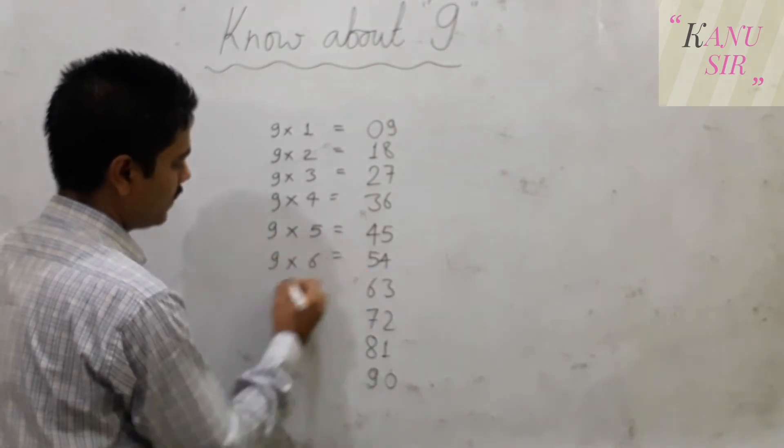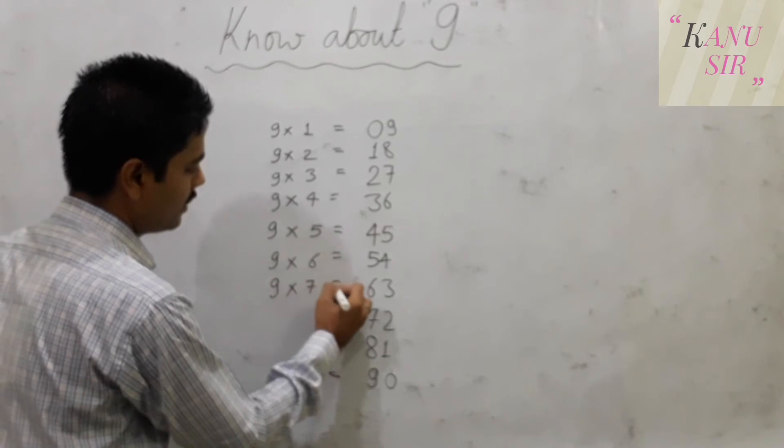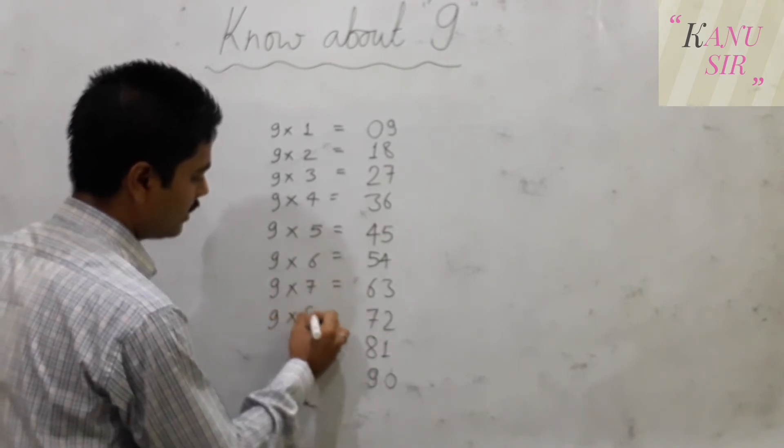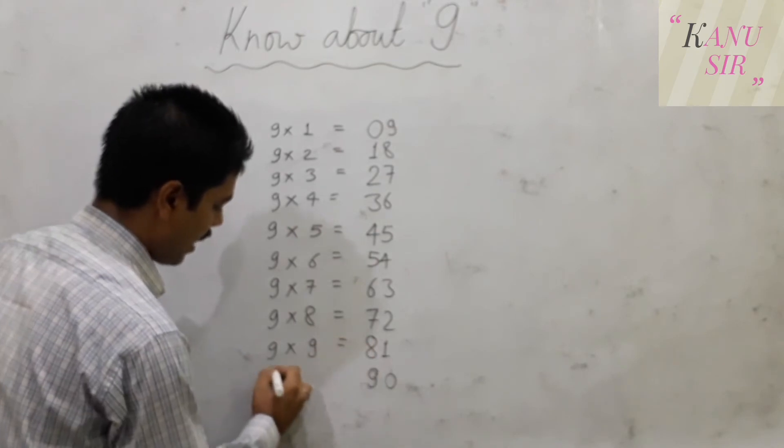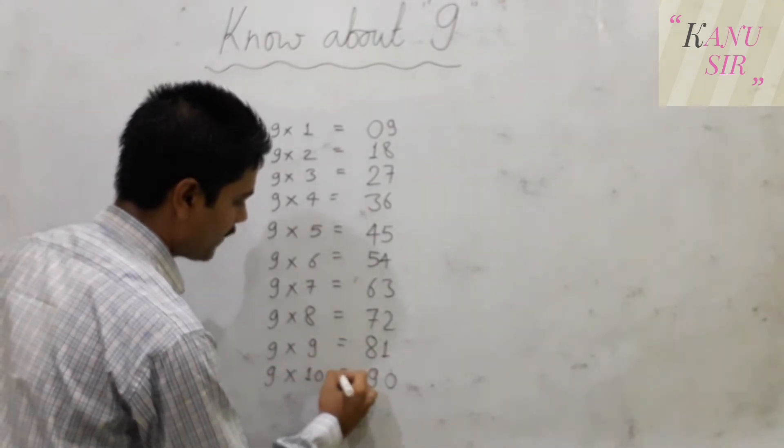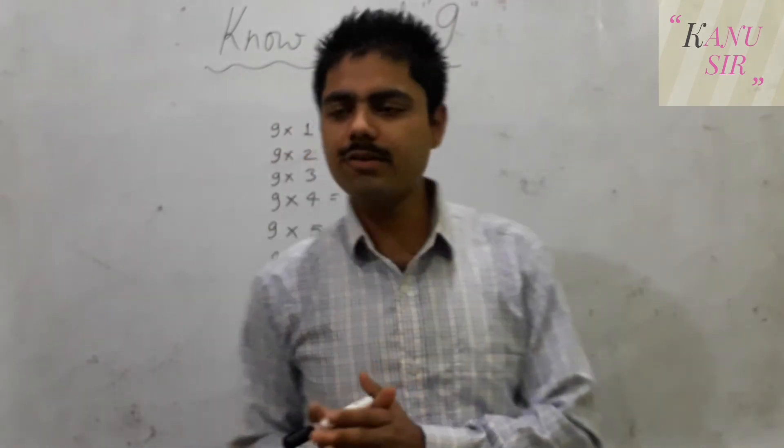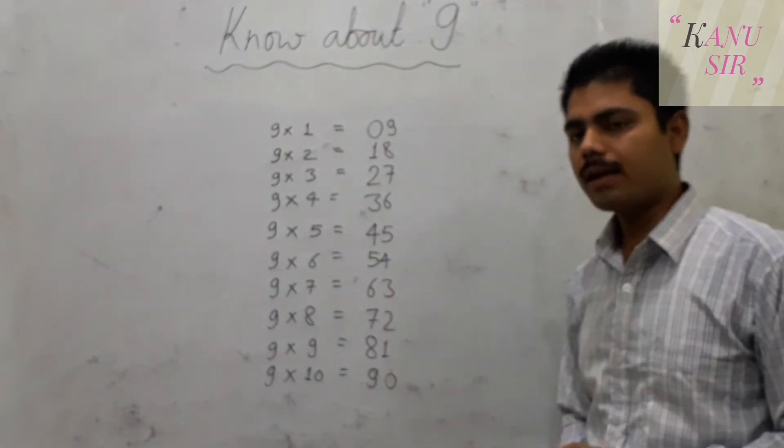9 times 6 is 54. 9 times 7 is 63. 9 times 8 is 72. 9 times 9 is 81. 9 times 10 is 90. So this is some of the interesting points related to 9.